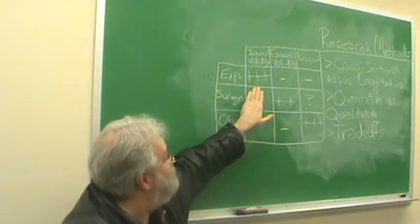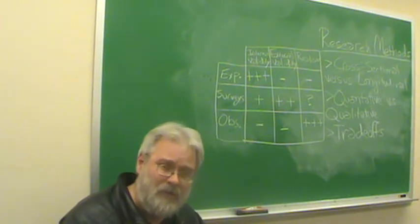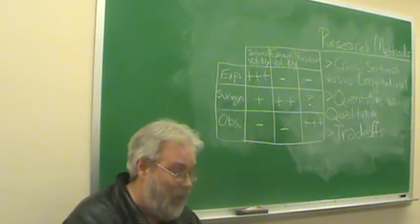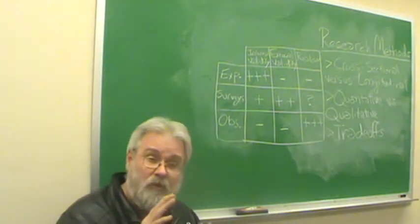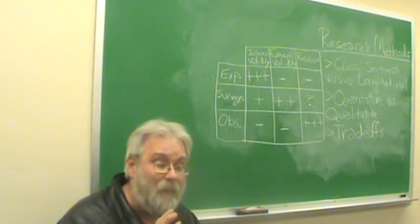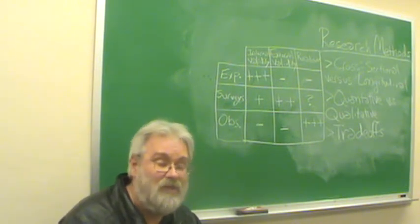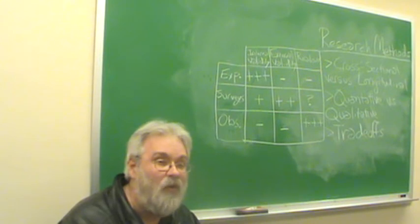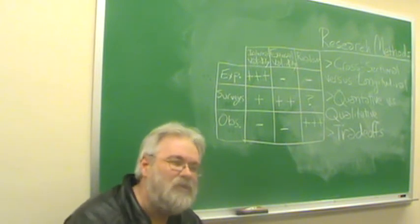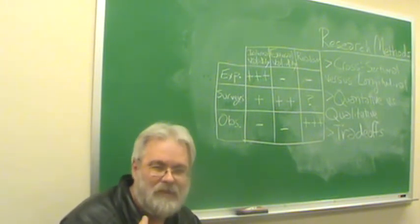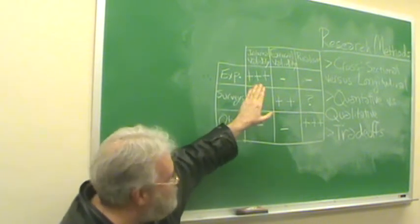In terms of these broad methods, the strongest method in terms of internal validity are experimental methods, exactly because you can use powerful techniques like random assignment. You can create your own control groups, experimental groups. You can control the physical and social environments in very complex ways so that you can control variables, eliminate or minimize spuriousness, deal with figuring out which way the arrow of causation points. If that's what you're interested in, experimental research is just about as good as it gets.